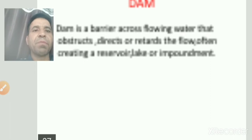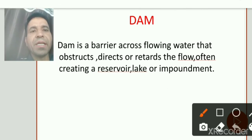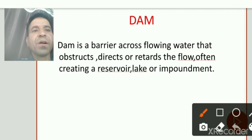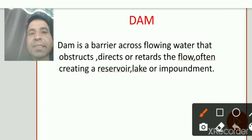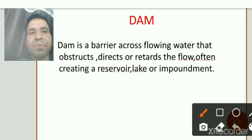What do you understand about dams? A dam is a barrier — barrier across flowing water — जो पानी के flow को रोकने, obstruct करने, direct करने, और retard करने का काम करता है — creating a reservoir, or impoundment. Generally हम पानी के flow को रोकते हैं और उसे store करते हैं for drinking water, irrigation, और electricity generation.